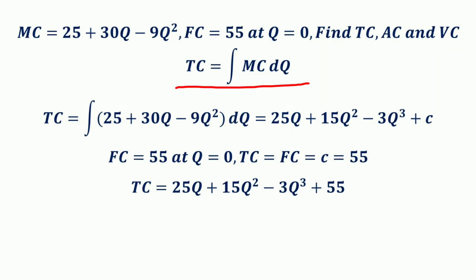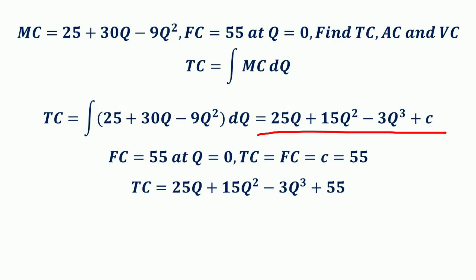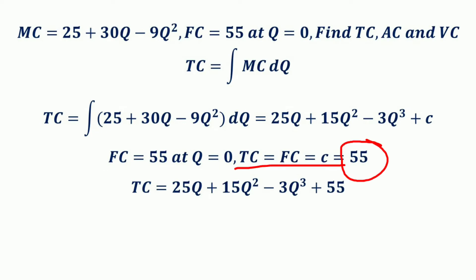We know the total cost is the integral of the marginal cost. So TC = ∫(25 + 30Q − 9Q²)dQ = 25Q + 15Q² − 3Q³ + C. Substituting Q = 0 with FC = 55: all terms become zero, so C = FC = 55.